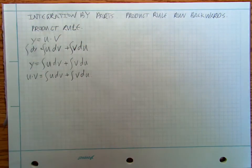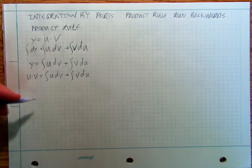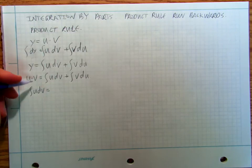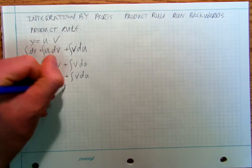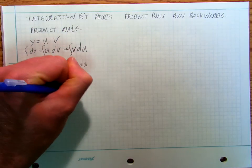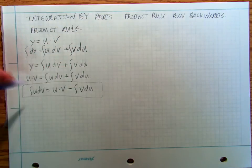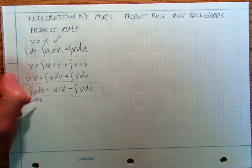And so now I'm going to sort of just rewrite it and I'm going to say that the integral of u dv is equal to u times v minus the integral of v du. And that is my integration by parts formula.